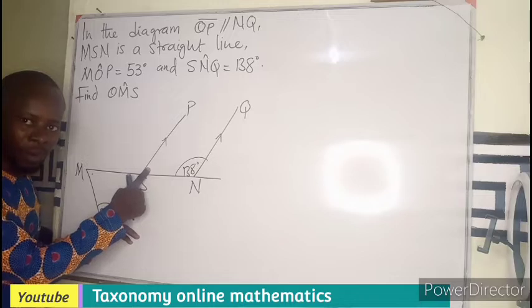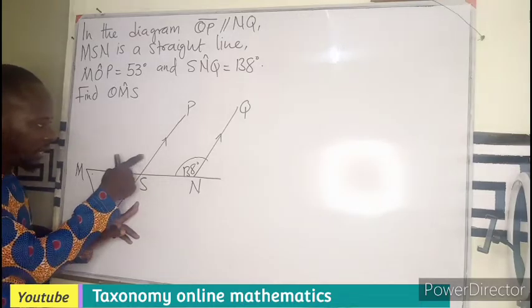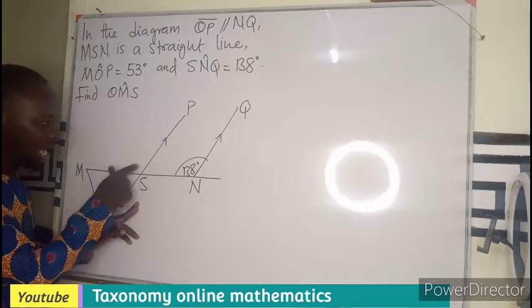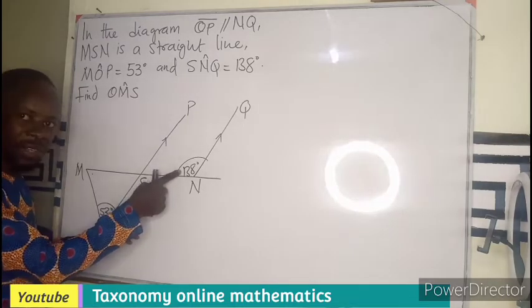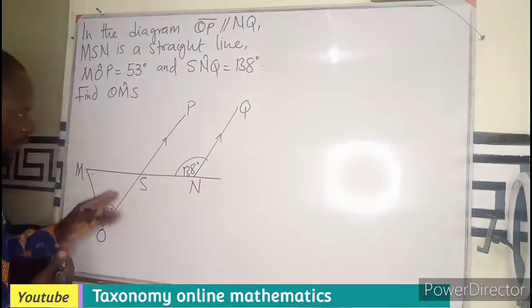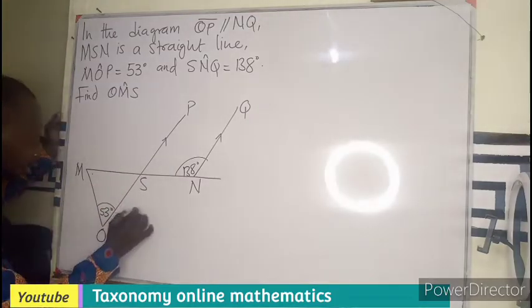These angles are co-interior. Also, this angle and these angles are corresponding. So I can say this is corresponding to this, or I can also say this plus this is co-interior. So if I want to use corresponding, I will say...